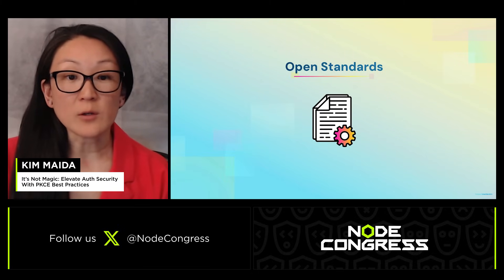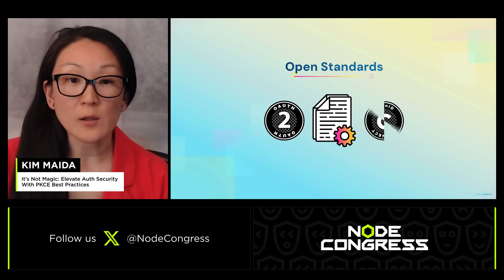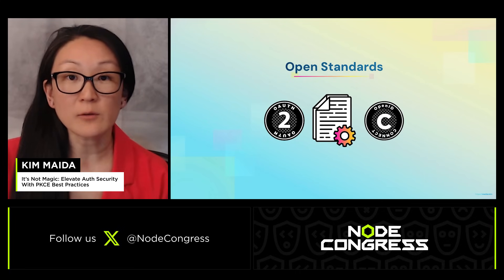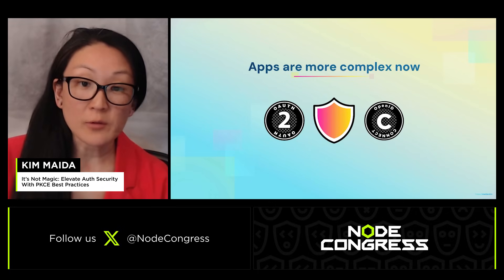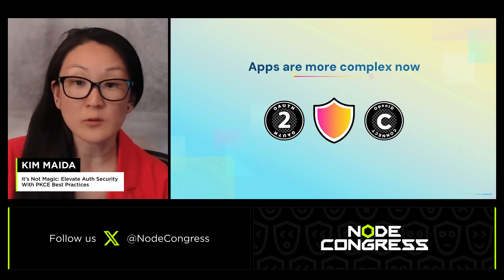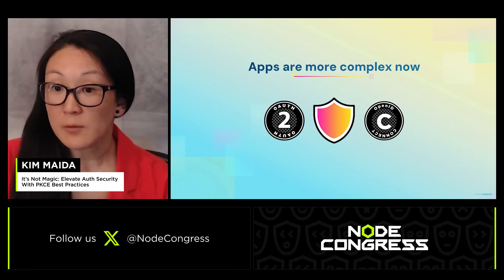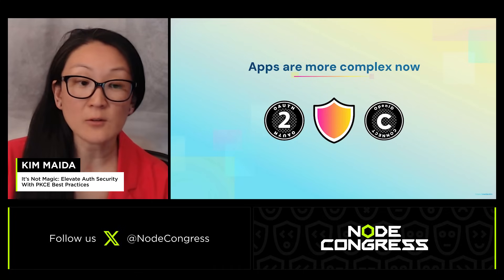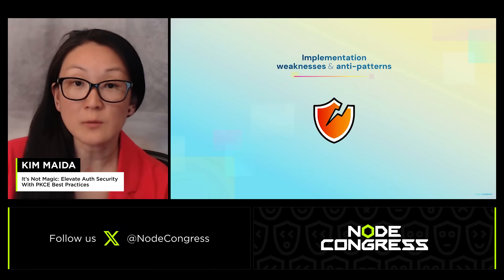The open standards we currently use for resource access with OAuth 2 and login with OpenID Connect have been around for over a decade. While OAuth 2 and OIDC are great for app security, they were written over 10 years ago. App architectures are way more dynamic now, technology has changed, and attackers have had plenty of time to learn how to exploit implementation weaknesses and anti-patterns.